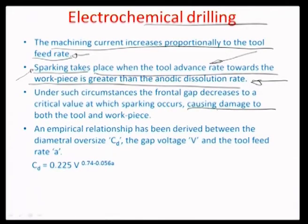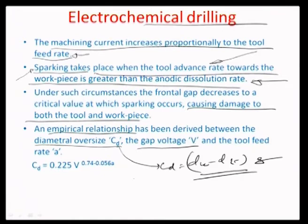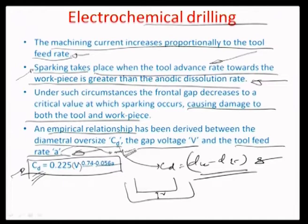Sparking can cause damage to both the tool and the workpiece. From experimental determination, there exists an empirical relationship between the diametral oversize CD — which equals workpiece diameter minus tool diameter — and the gap voltage V between the frontal end of the tool and the workpiece surface. For a particular feed rate A (in mm/min), it has been empirically determined that CD is proportional to V^0.74 minus 0.056·A. That covers what we have for the electrochemical drilling process.